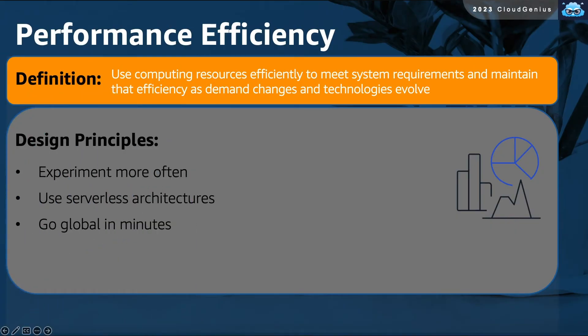The fourth pillar is Performance Efficiency. This pillar checks whether your architecture is capable of maintaining the same performance in case the demand changes or technologies evolve.